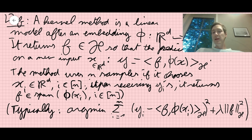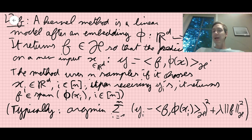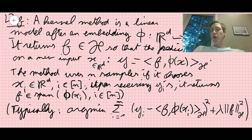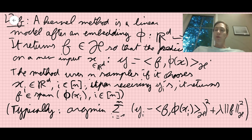Why is the solution in the span? The risk minimization part only depends on what f is in the span of the phi(x_i). Orthogonal to that span, there's no contribution to the error terms. The regularization term forces you that if there's no point in adding something orthogonal to all the phi(x_i) for prediction, you shouldn't include it, because otherwise it would increase the norm of f in H. That's what we mean by a kernel method.